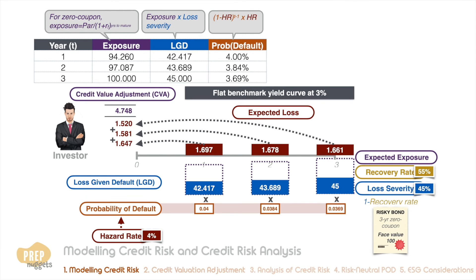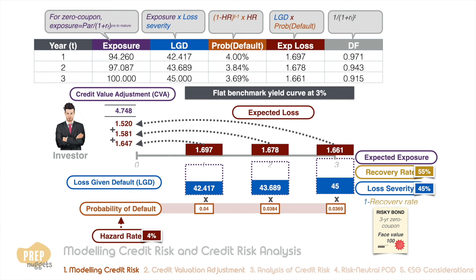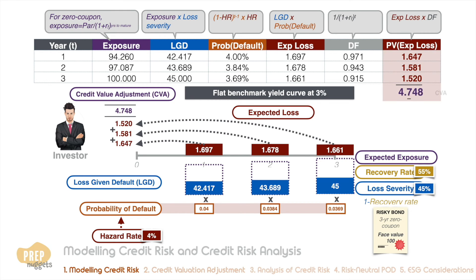Multiplying the loss given default by the probability of default for each year gives the expected loss. Calculate the discount factors for each year based on the benchmark yield curve to get the present value of expected loss. Summing these present values gives the CVA.